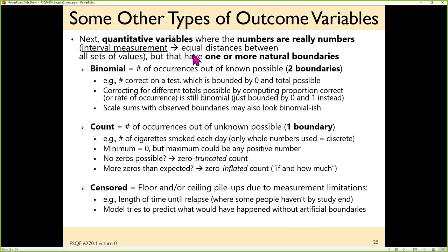Among variables that are numbers, we have to watch out when trying to predict them for whether or not they have boundaries. The normal distribution is a continuous distribution with no boundaries — it predicts that the further out from the top of the curve you go, the less likely it is, but it keeps going forever. Most variables we work with that are numbers don't work like that.